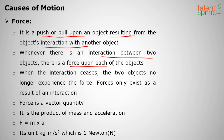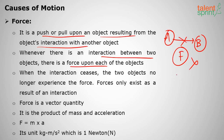Whenever there is an interaction, there will be a force. If object A is hitting object B, that interaction produces a force. If there is no interaction, there is no force. Forces exist only because of interaction between two or more bodies. Force is a vector quantity because it has a direction.